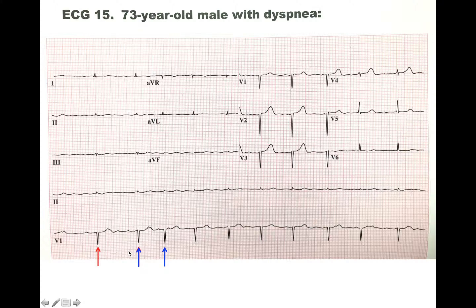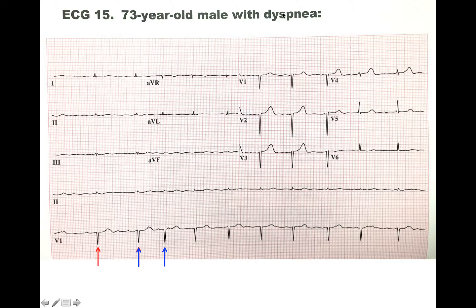Another thing to notice is that each ventricular contraction is occurring at irregular beats — this distance is longer than this distance, and it elongates a little more again. So we can say this is an irregular-irregular beat, and therefore we can classify this as atrial fibrillation. There is overall low voltage because the atria is fibrillating and the ventricles are trying to contract but it is not a regular rhythm.